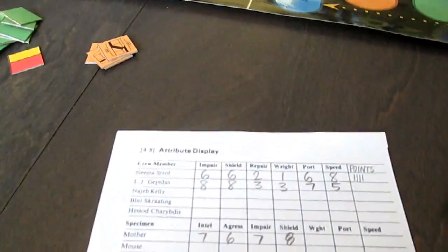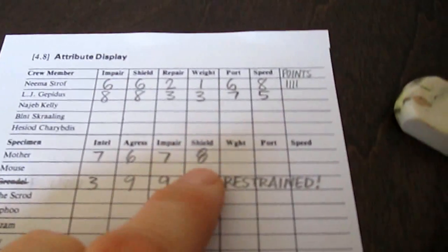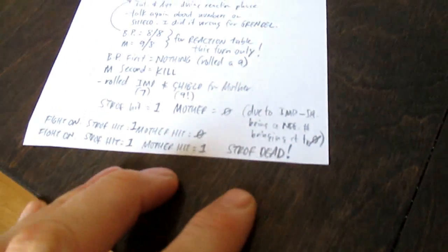In this case that would have been a one for the table as opposed to a negative number. Basically what happened is Stroff got his ass handed to him and ended up getting killed by mother. He was only able to get one point off of mother's shield right at the very last desperate move.